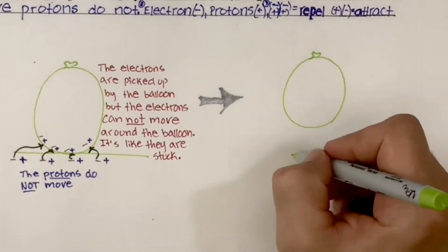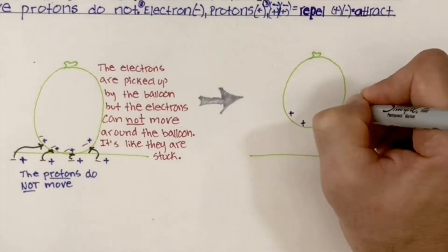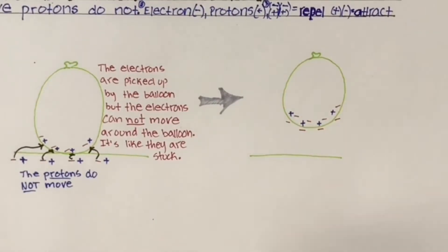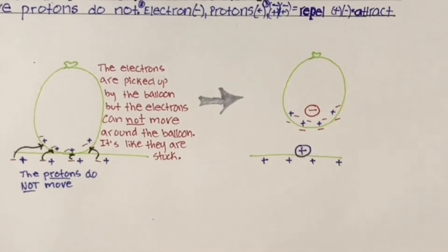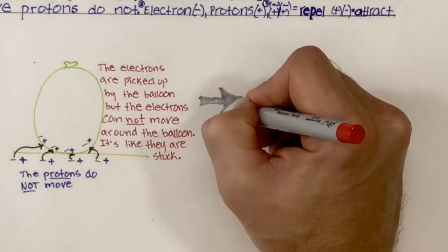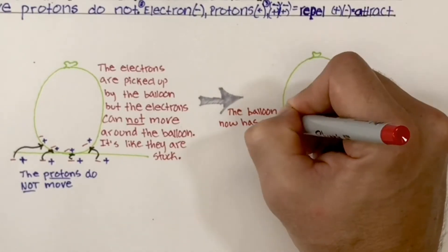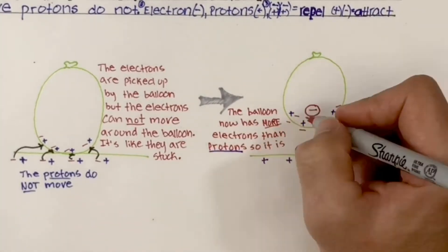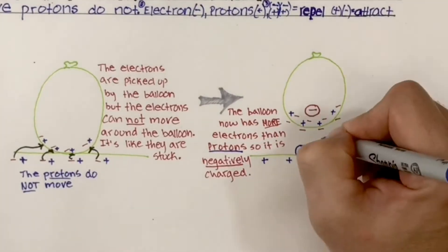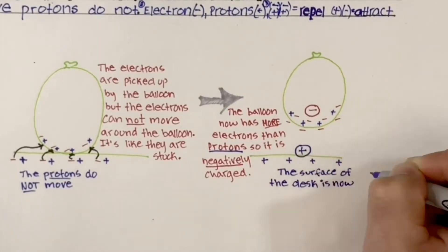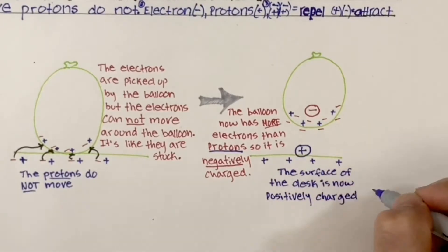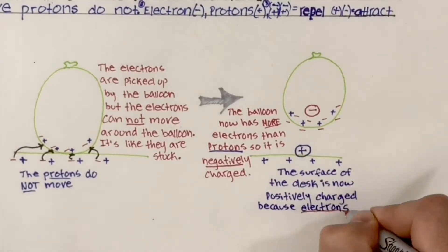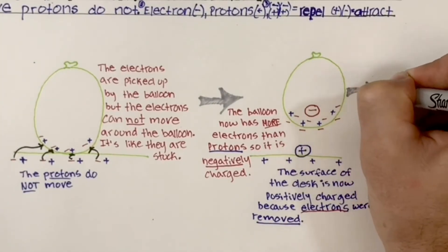So we redraw our protons and electrons. But now we have more electrons in the balloon, making the balloon negative. And the top of our desk now would be positive. So the balloon now has more electrons than protons. And if you have more negatives than positives, that makes you negatively charged. Whereas the surface of the desk lost some electrons, so it's positively charged now because electrons were removed.